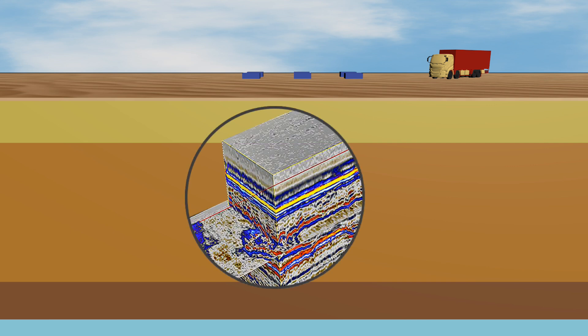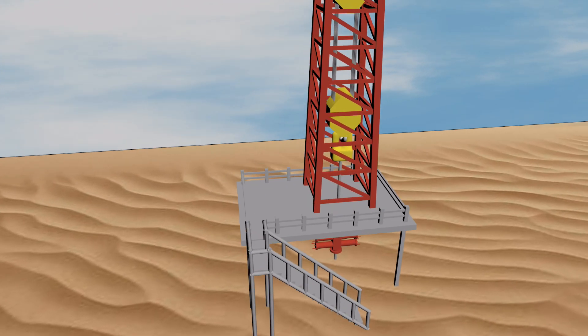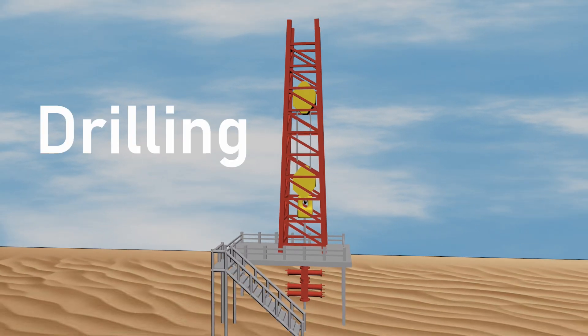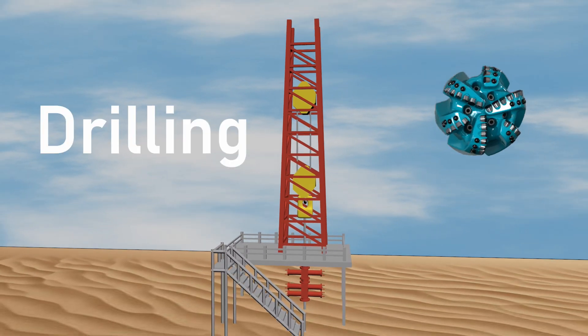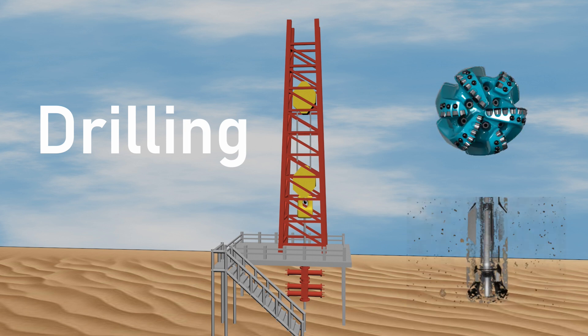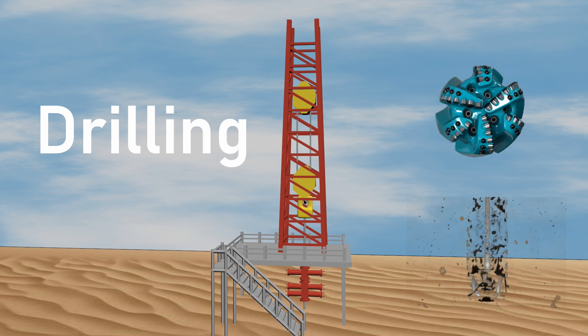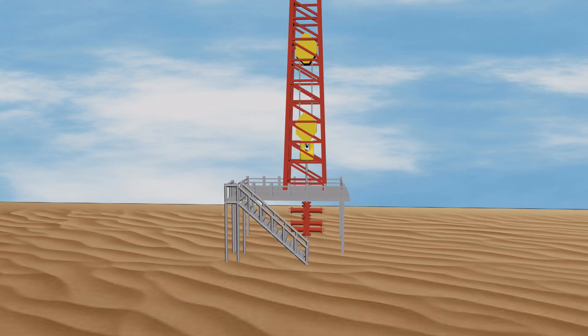If these images show promising results, it will be accepted to proceed with drilling to confirm the presence of hydrocarbons. The drilling phase involves using a drilling rig to drill a well into the Earth. Drillers use a rotating drill bit to penetrate the rock layers and a drilling fluid to help keep the well stable and lift the drilling cuttings to the surface.